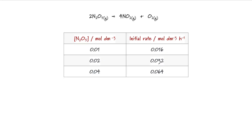The first reaction we're going to look at is the decomposition of dinitrogen pentaoxide into nitrogen dioxide and oxygen, according to the stoichiometric equation we have here. We've got a set of results for this experiment. In our results table we've got the concentration of the dinitrogen pentaoxide and some values for the initial rate of reaction. The units are moles per decimetre cubed per hour.